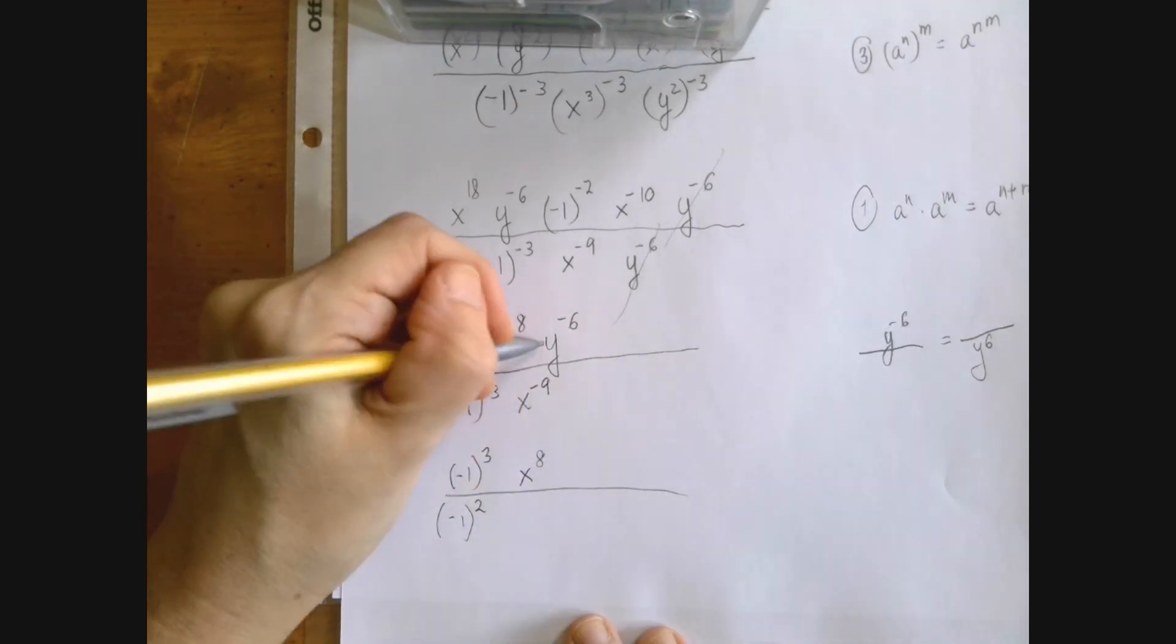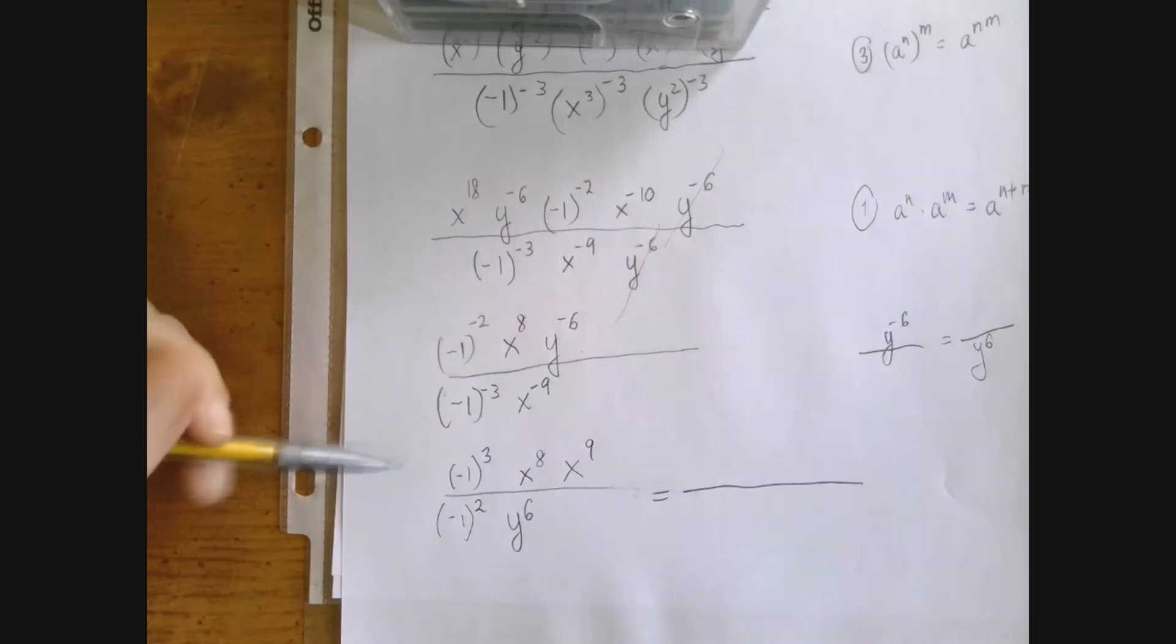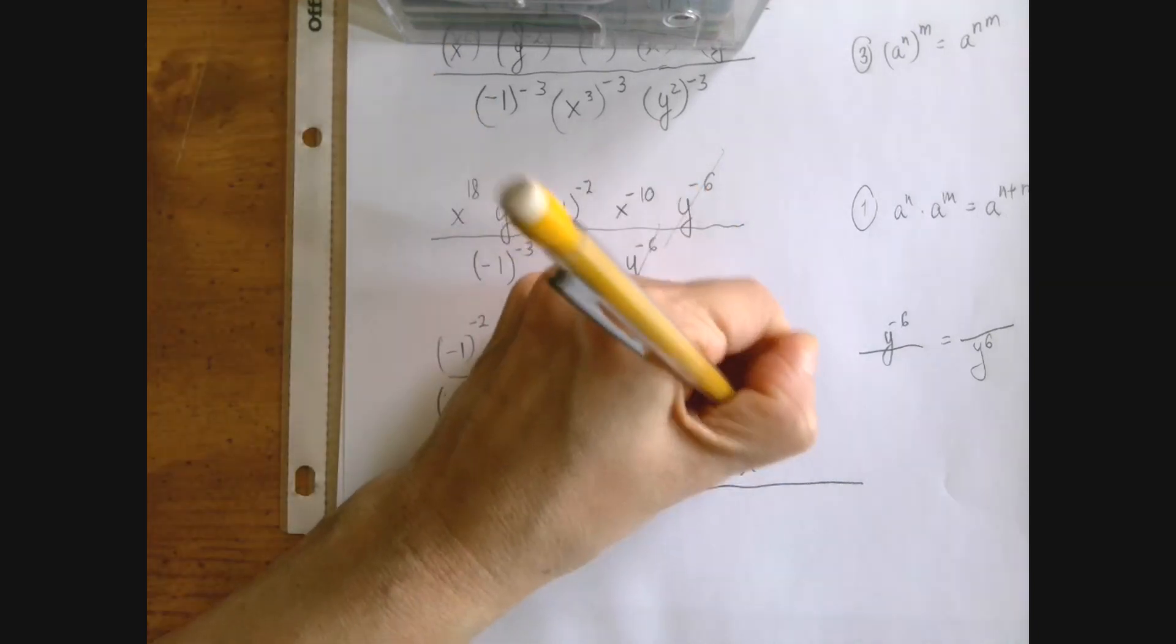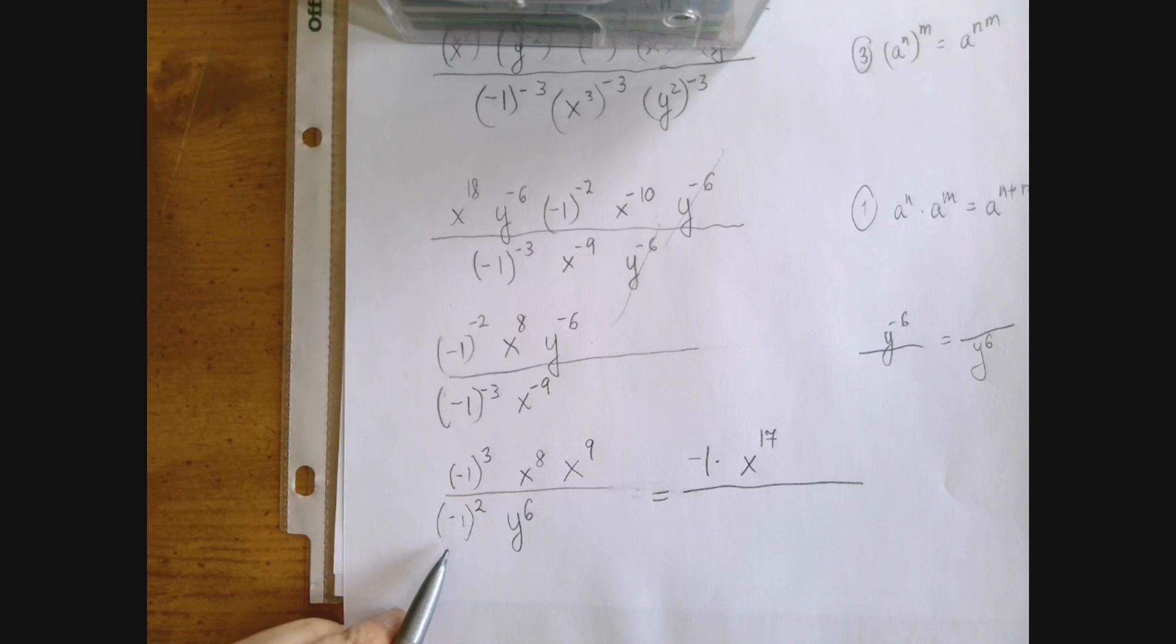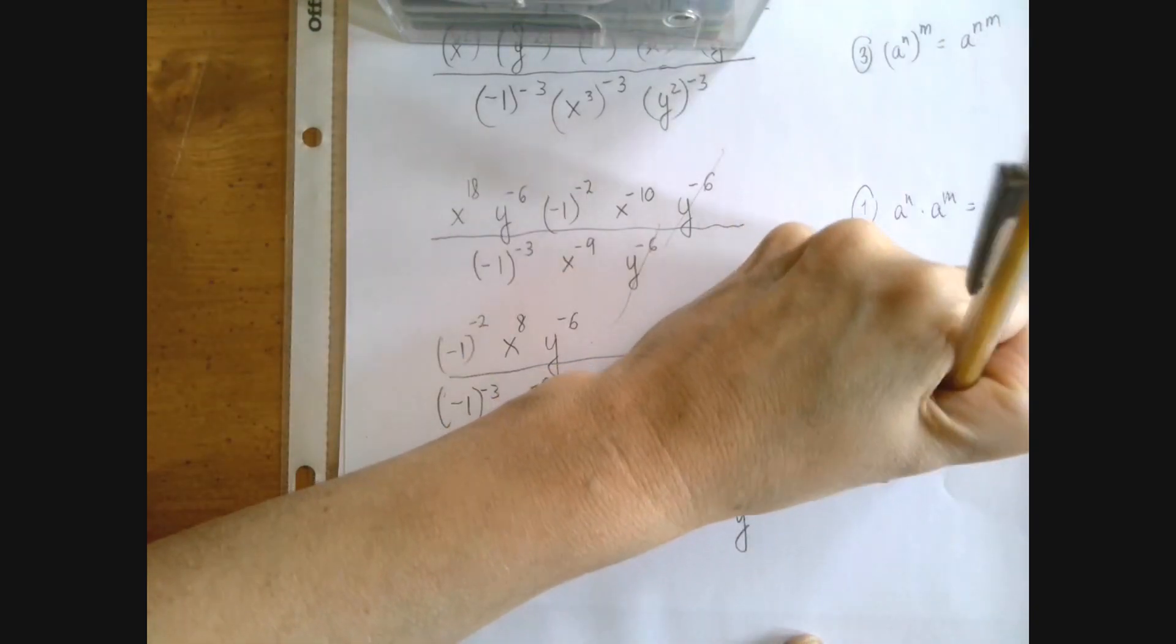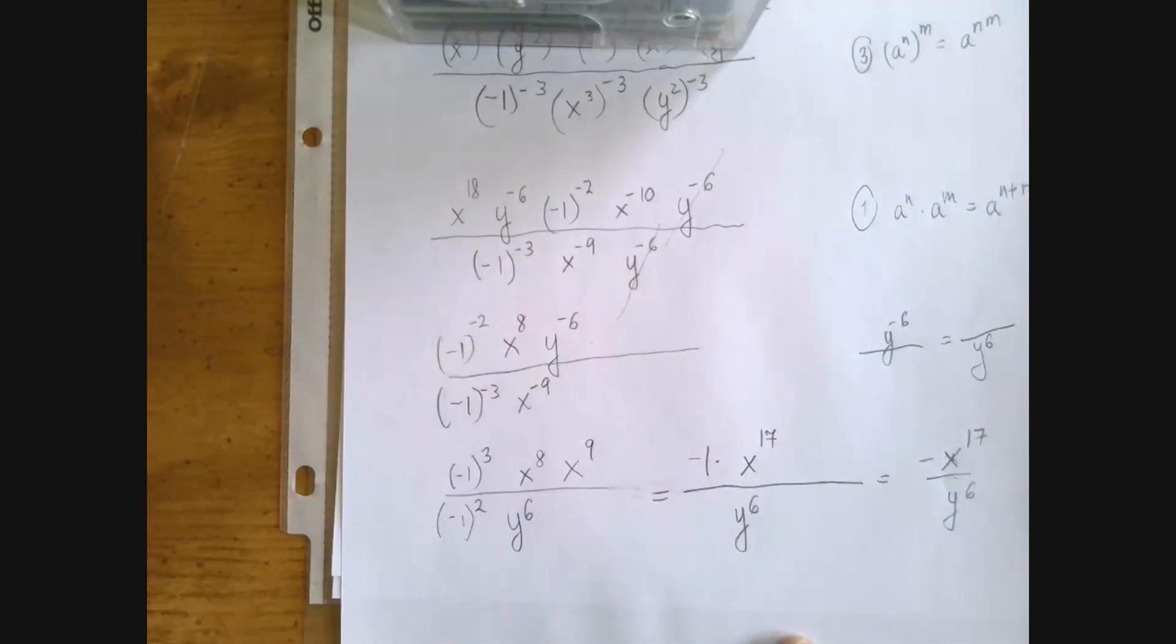X to the 8 can stay. Y should travel. And finally, x could travel. Negative 1 to the 3rd power is negative 1 times negative 1 times negative 1. That's negative 1. And then we have x to the 8 times x to the 9 in the numerator. That's x to the 17. Negative 1 to the 2nd power is plus 1. So our final answer is minus x to the 17 divided by y to the 6th power.